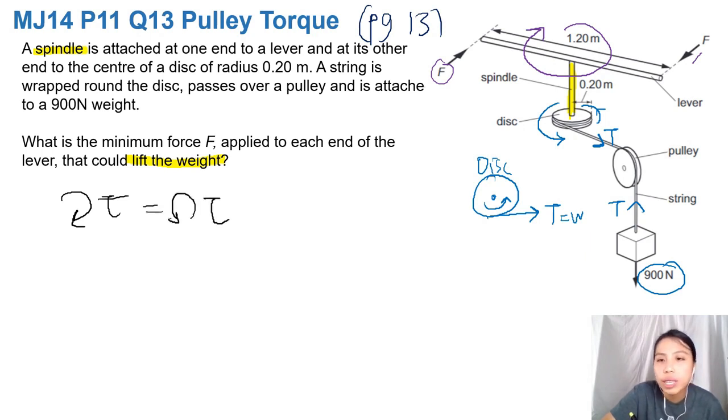Where's the clockwise moment coming from? That's coming from the lever on top. Then the anti-clockwise is coming from the disc because of that heavy weight. Okay, anti-clockwise and clockwise. You learn your rotations.